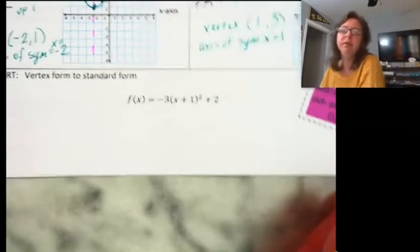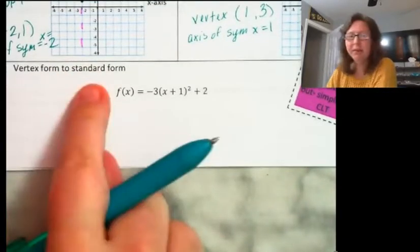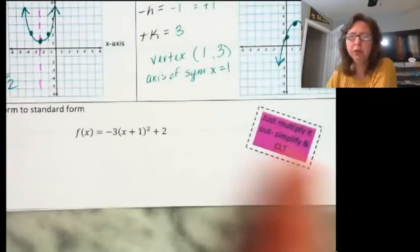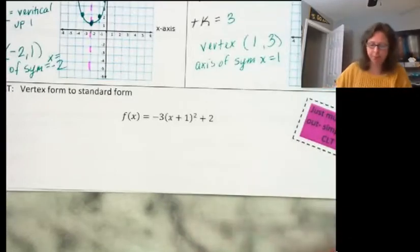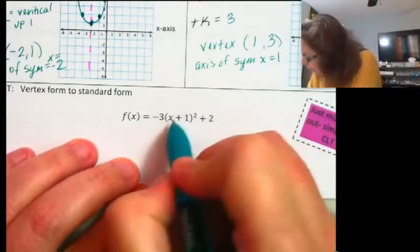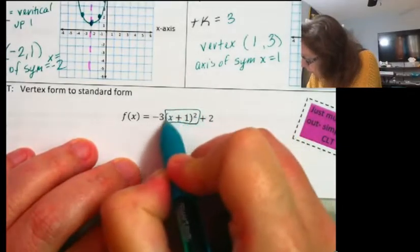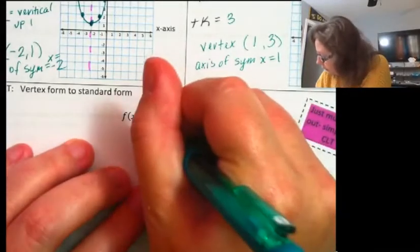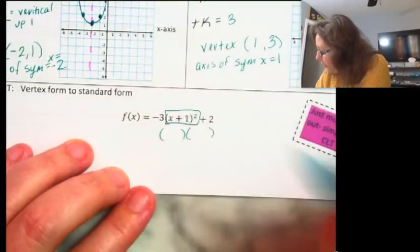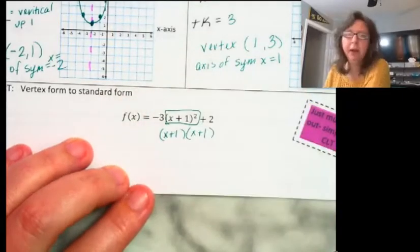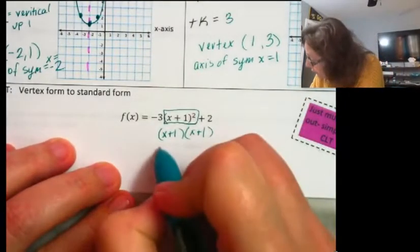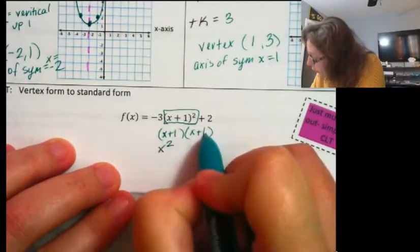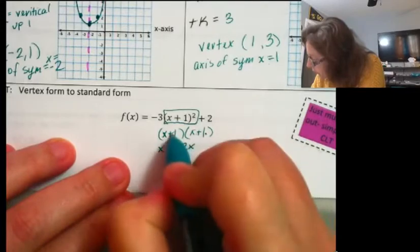Sometimes we don't want to work in vertex form — sometimes we want to go from vertex form back to standard form. All we have to do is multiply it out, simplify it, and combine the like terms. So the first thing I'm going to need to do is expand this binomial squared using the distributive property.